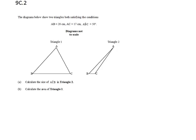In this question, we're told about diagrams which represent two triangles. In both triangles, the side AB is 20 centimeters, the side AC is 17 centimeters, and the angle ABC is 50 degrees. Knowing that, in Part A, we want to calculate the size of the angle ACB in triangle 2. So that would be this triangle here.